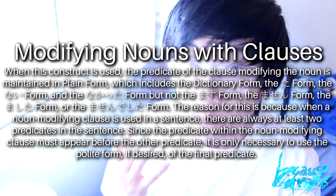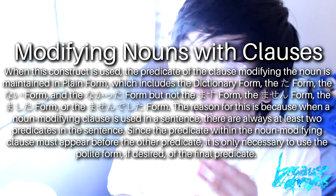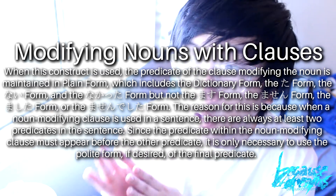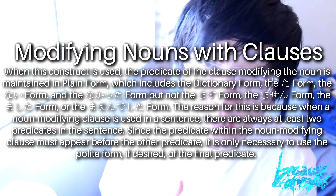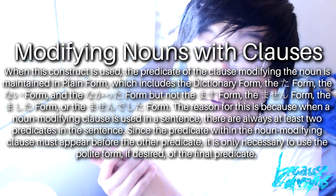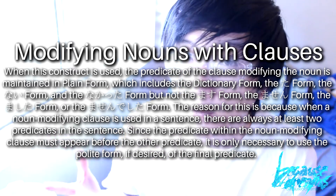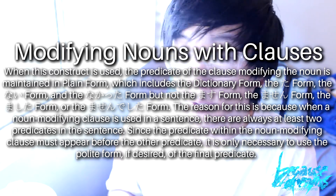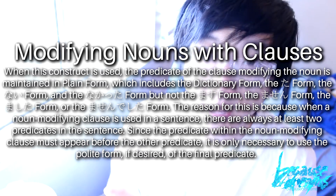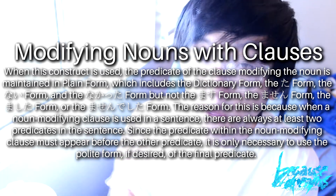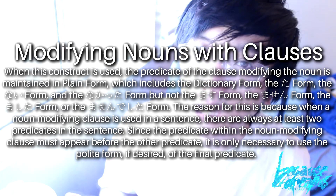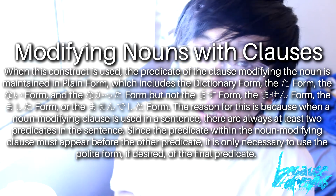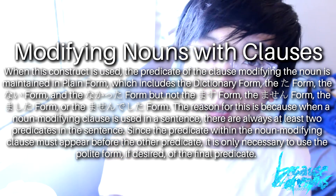The reasoning behind using the plain form is that when a noun-modifying clause is used in any sentence, it's going to be the first predicate clause, since it precedes the noun. The noun will then have stuff happen after it, forming the second predicate clause. In Japanese, the general guideline is that when you have two predicate clauses in a sentence, it's the second one — the one that ends the sentence — that needs to be in the polite form if you're using polite form at all, while the first one stays in the plain form. This guideline appears in numerous other grammar constructs we'll encounter in this series.